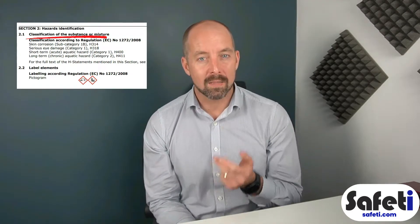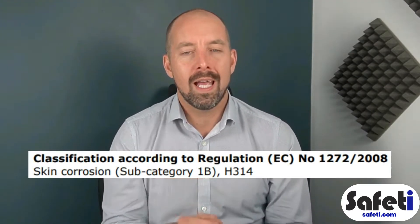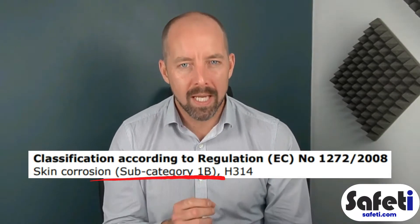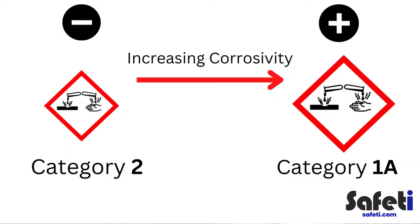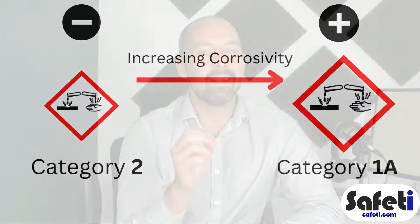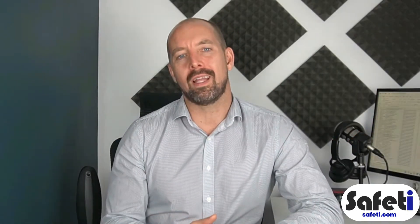Sodium hypochlorite has a number of classifications relating to harm both to people and to the environment. As the extract on screen shows, this substance is classified for skin corrosion, serious eye damage, and it's also classified as both a short-term and long-term hazard to the aquatic environment. Taking skin corrosion as an example, we can see it's been assigned subcategory 1b. Corrosive substances are ranked from 1a being the most corrosive, through 1b and 1c, down to 2 for the least corrosive. Being in subclass 1b, this sodium hypochlorite product is at the more severe, higher end of the corrosive category scale.